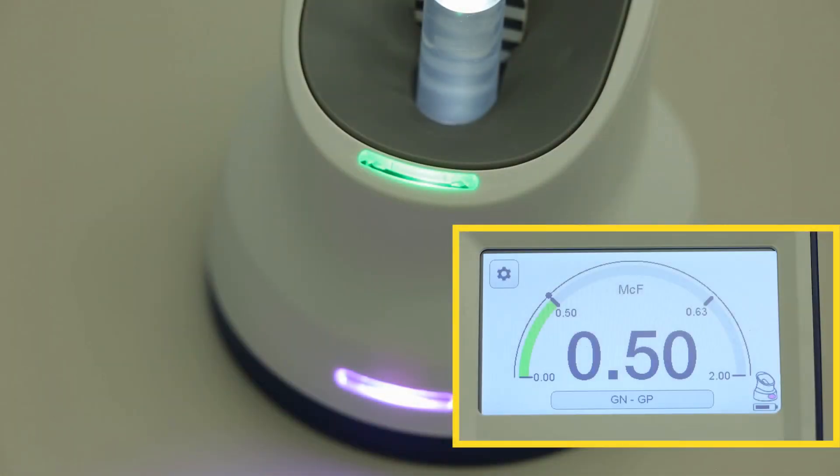The McFarlane status light near the top of the pod matches the McFarlane meter gauge color on the display screen. The McFarlane status light can either be green, red, or yellow.